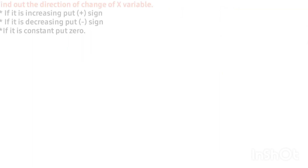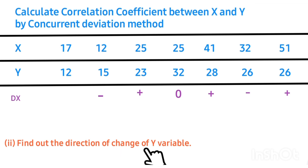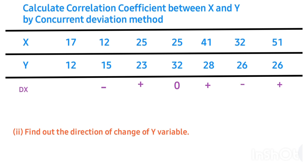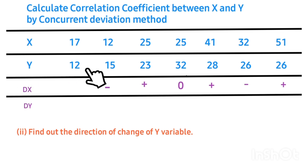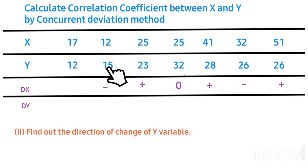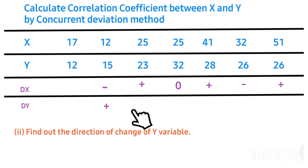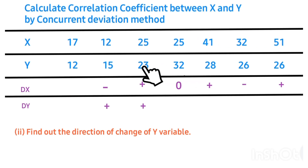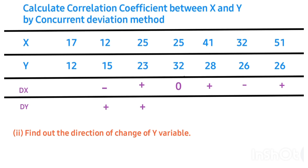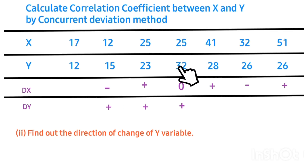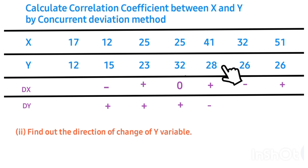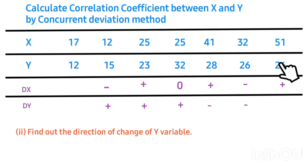Step 2 says: find out the direction of change of the Y variable, denoted as Dy, using the same rules. Comparing the first two Y values — 15 is greater than the first value, so we have a positive sign. Comparing 15 and 23 — 23 is greater, so positive. Comparing 23 and 32 — 32 is greater, so positive. Then 28 is less than 32, so negative. 26 is less than 28, so negative. Finally, comparing 26 and 26 — the value remains constant, so we put zero.